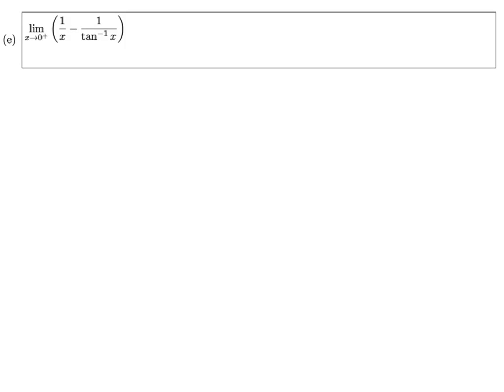So we've been looking at the limit as x approaches zero from the right of 1/x minus 1/tan⁻¹x. First of all, we noted that we had an indeterminate form of type infinity minus infinity, so we had to transform it into a quotient of type 0/0 or ∞/∞.